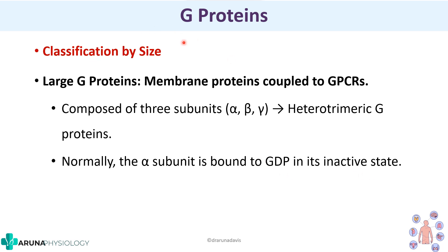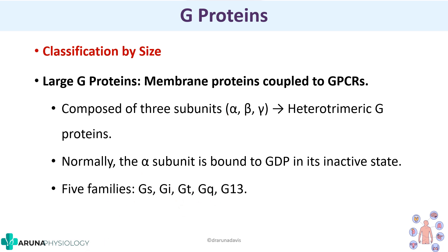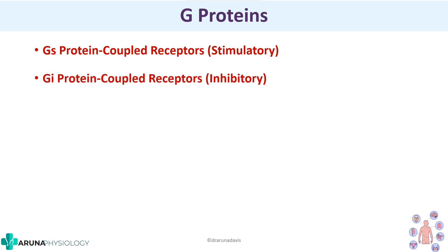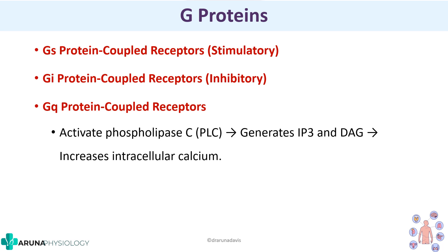By size, G-proteins are classified into large and small. The large G-proteins bound to GPCRs contain three subunits, and it is the alpha subunit which is bound to GDP. We also have different families of G-proteins: Gs, Gi, Gt, Gq, and G13. Gs protein coupled receptors are stimulatory receptors whereas Gi protein coupled receptors are inhibitory. For Gq protein coupled receptors, they activate phospholipase C. These are the three important families of large G-proteins.